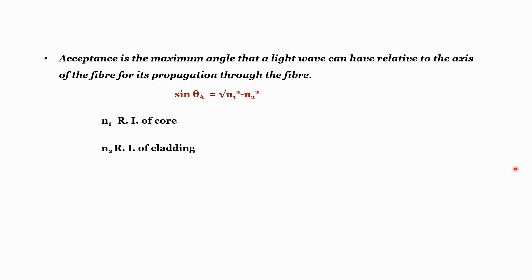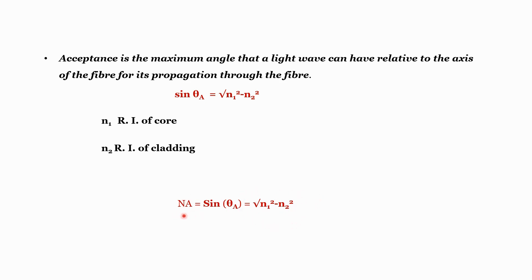Keep in mind that n1 will always be greater than n2. For numerical aperture, it is the measure with which we can calculate the intensity of light. Numerical aperture (NA) = sine(θa), and since sine(θa) = √(n1² − n2²), that value is used to calculate the numerical aperture.